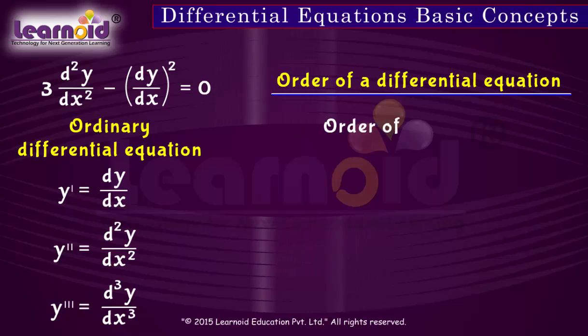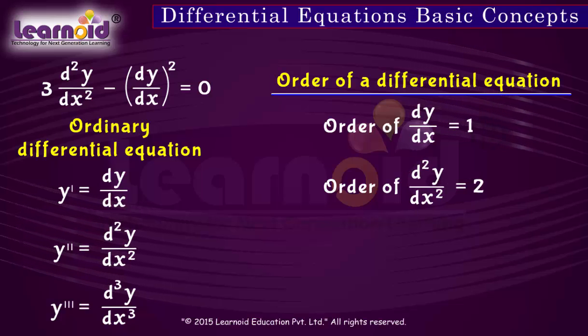Order of dy by dx is 1, d square y by dx square is 2, and d cube y by dx cube is equal to 3 and so on.